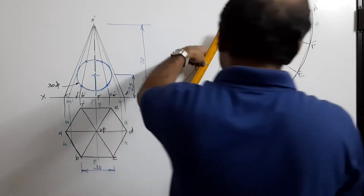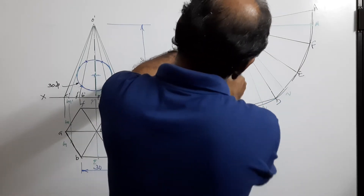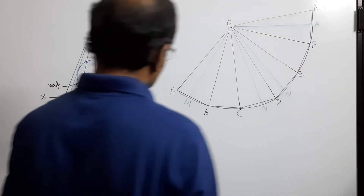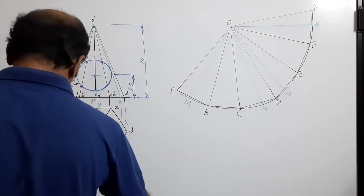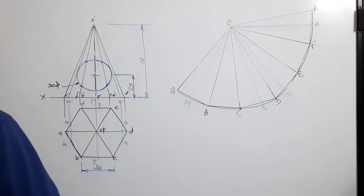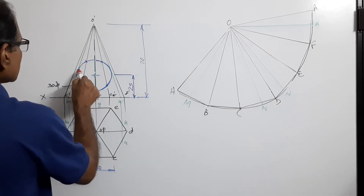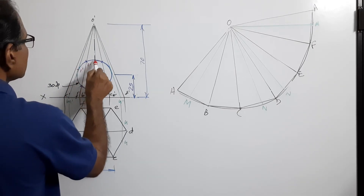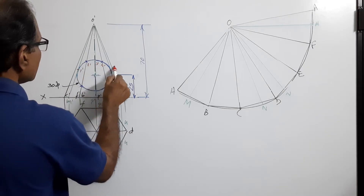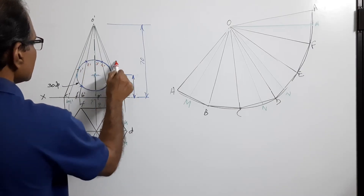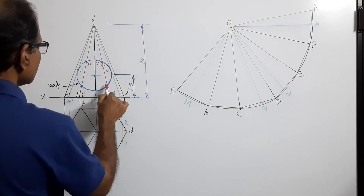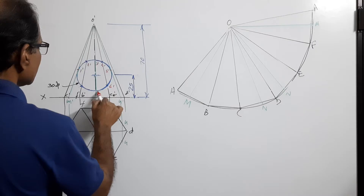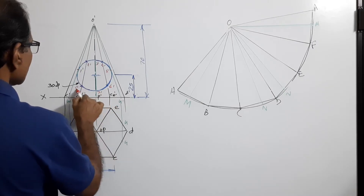Now locate where our points are and name them: 1', 2', 3', 4', 5', 6', 7', 8'.